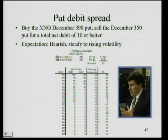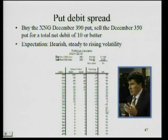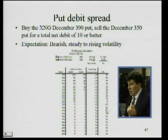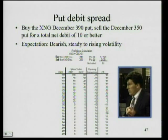The break-even on this trade is going to be 380. It's calculated by taking the strike price of the option that you bought — and because this is a put — the strike price of the option that you bought minus the debit. So 390 minus the debit of 10 is 380. And this trade has been closed out.